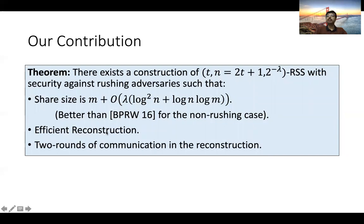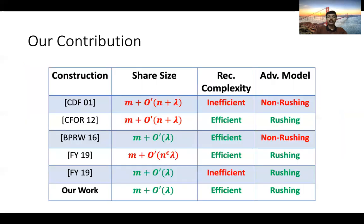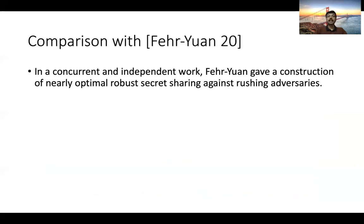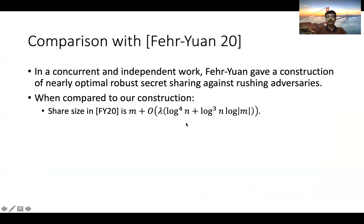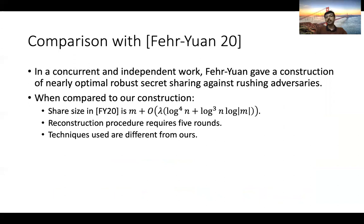Our work completes the table by giving a construction with near-optimal share size, polynomial-time reconstruction, proven secure against rushing adversaries. In a concurrent and independent work, Fehr and Yuan also gave a construction of nearly optimal robust secret sharing against rushing adversaries. Compared to our construction, their share size is slightly larger and reconstruction requires 5 rounds versus our 2 rounds. Furthermore, the techniques used in both works are completely different.